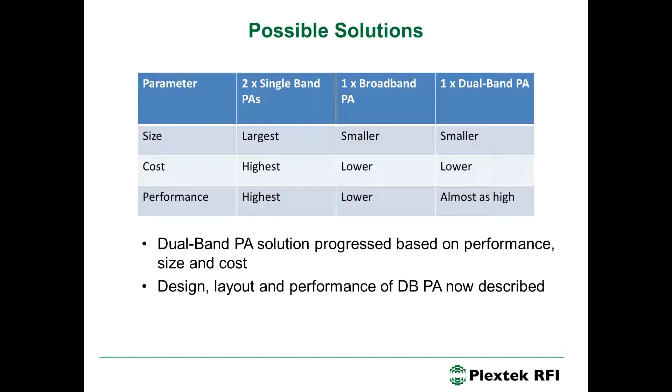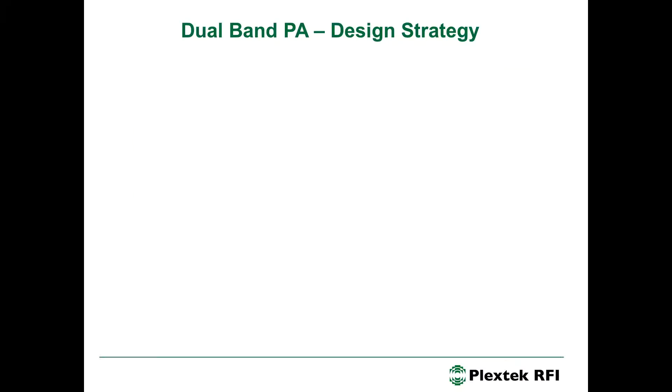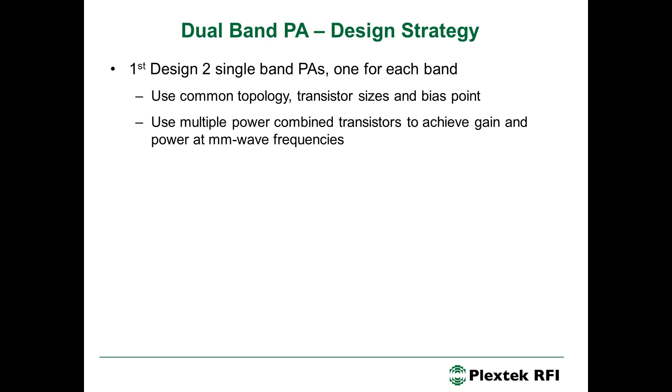And I'll now describe the design, layout and performance of the dual-band PA. I'll first of all talk about the design strategy. Well, the first thing to do was to design two single-band PAs, one for each band, but use a common topology and common transistor sizes and similar bias points. Also, use multiple power combined transistors. Now, this is a technique that's often used at millimetre wave in order to achieve both the power and the gain.